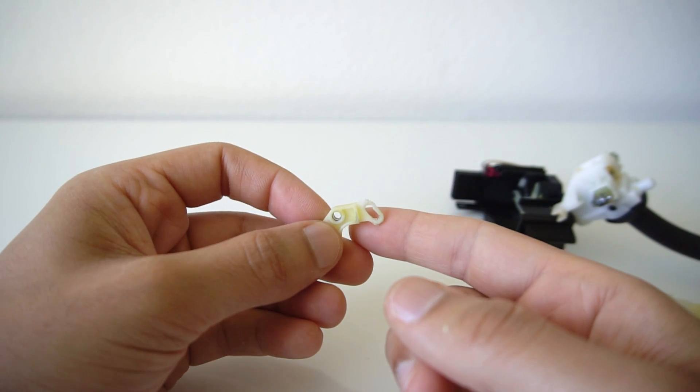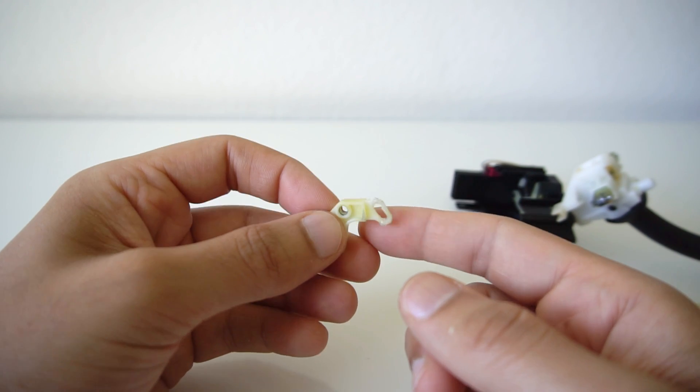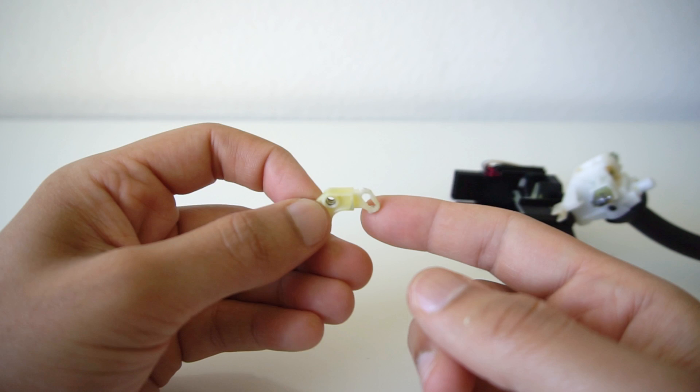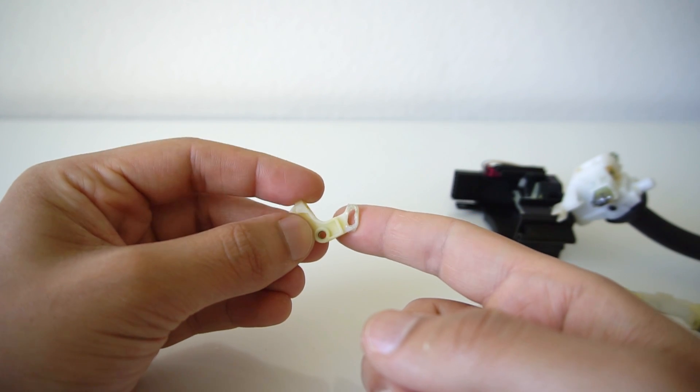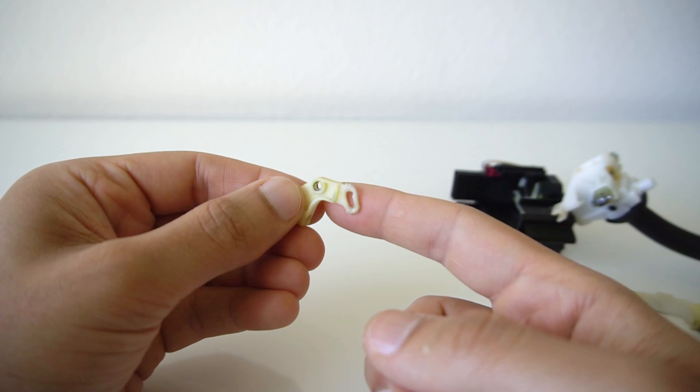I've got the broken piece I showed you earlier out of the housing and glued it together with some plastic glue. I used E6000 and let it cure for about 24 hours.